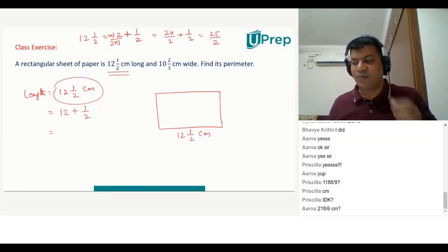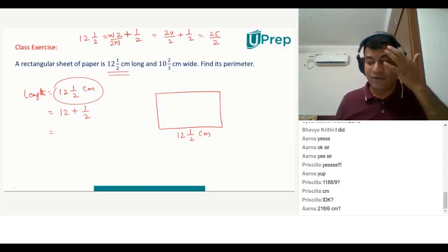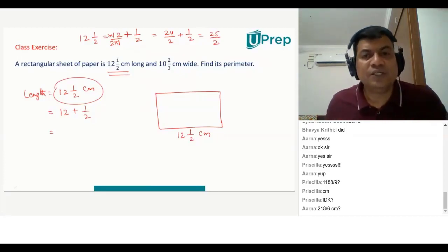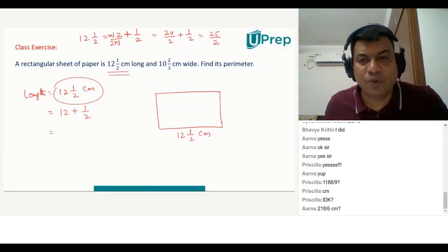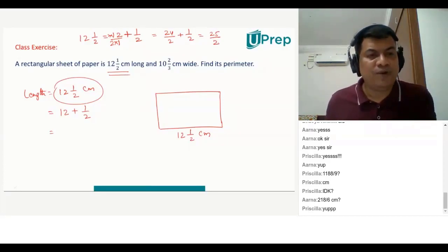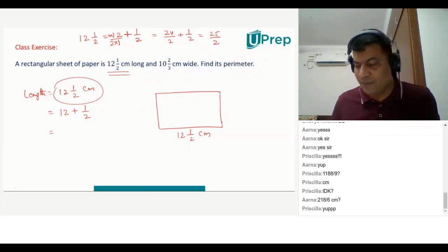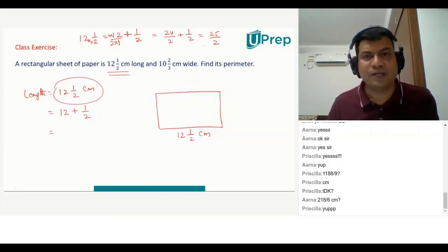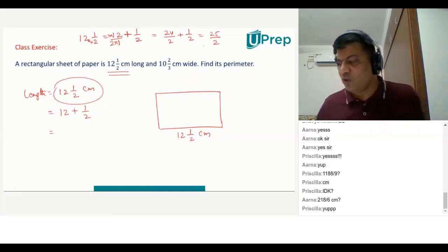Is that okay with everyone? Everyone understands how we converted 12 and 1 by 2? People do it very fast by saying 2 into 12 is 24, then 24 plus 1 is 25, so the answer is 25 by 2.